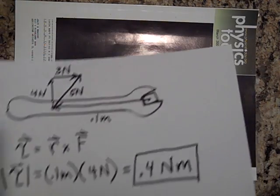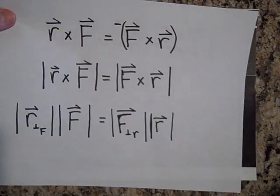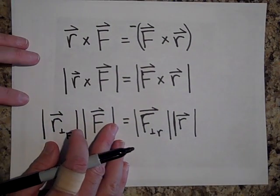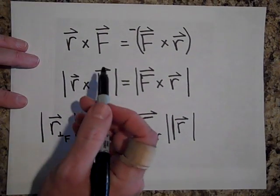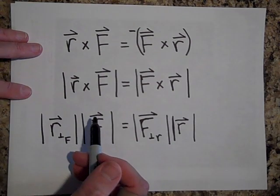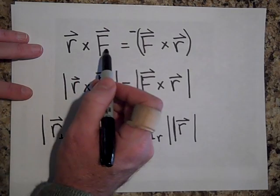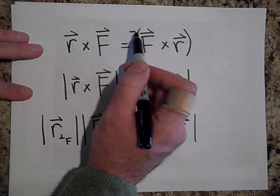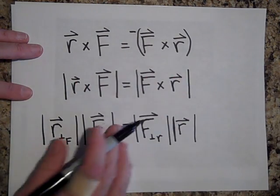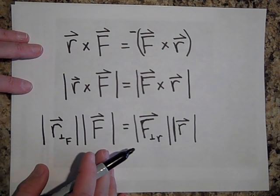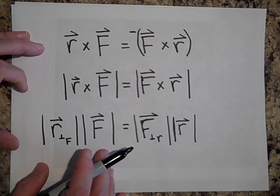I want you to know something about the cross product here. It's not commutative. You know how A dot B gave you the same thing as B dot A? Not true for the cross product. R cross F gives you the opposite value of F cross R. I'll talk more about that later, but I want you to know something though.